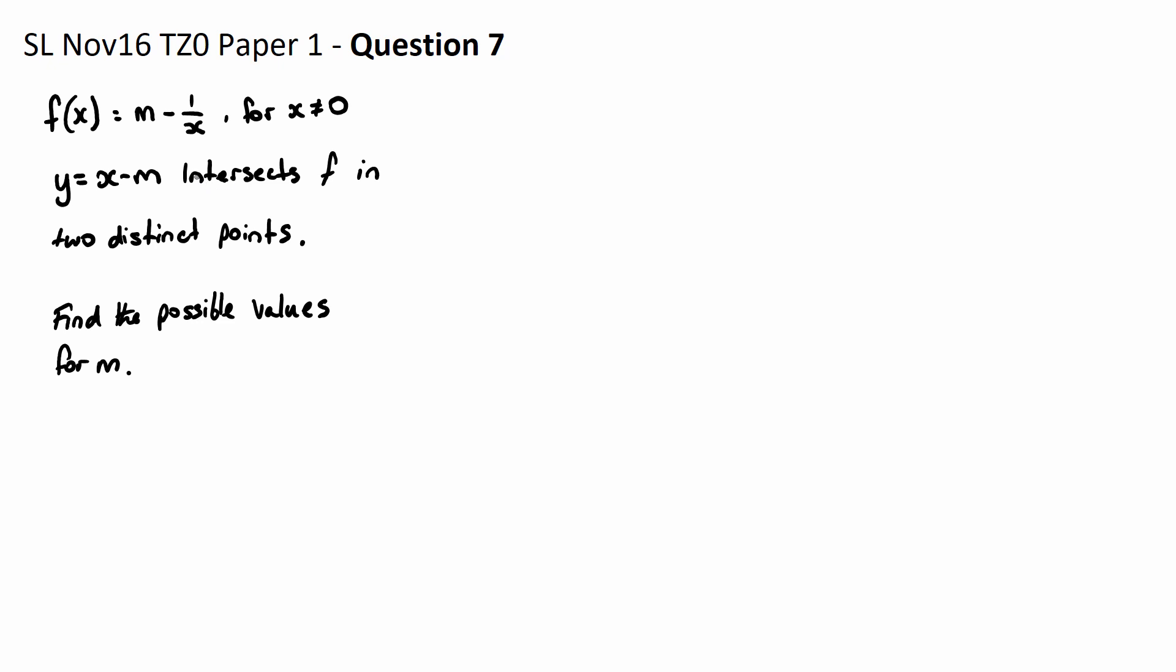So if we want to find where they intersect we need to let these two graphs equal each other. Let's make f(x) equal to y. Therefore we'll have m minus 1 over x will equal x minus m.